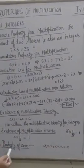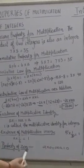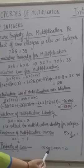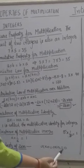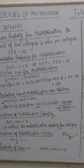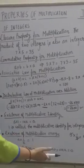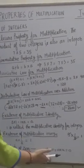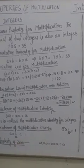The property of 0: for any integer A, A × 0 = 0 × A = 0. We have seen this in junior classes as well — 5 × 0 = 0 and 10 × 0 = 0.